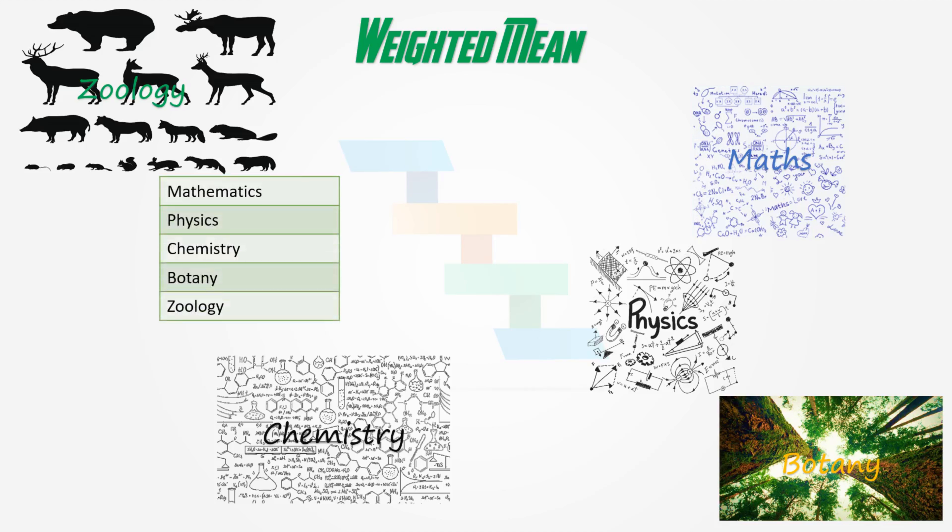It consists of mathematics, physics, chemistry, botany, and geology. Here, not all the subjects carry the same importance. Each subject's importance is denoted as percentage. Here, mathematics is valued more than all other subjects. Mathematics is valued at 40% and all other subjects contribute 15% each.